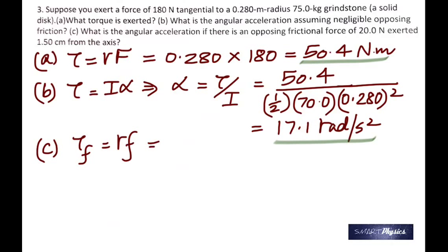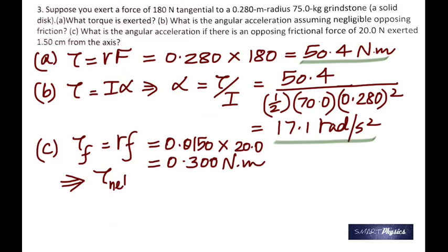So what you do now is find the torque due to friction. That's why I put it as tau F. So that is because this number is 1.5 cm changed into meters, and the force is 20 newtons. So that's the torque due to friction.